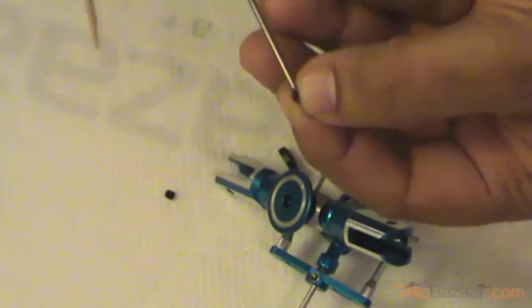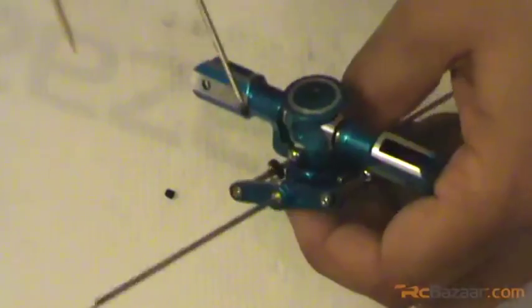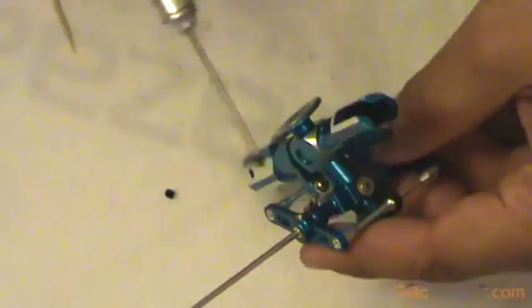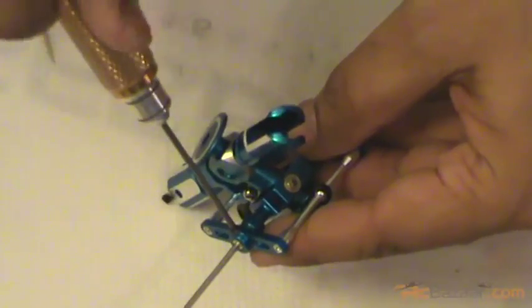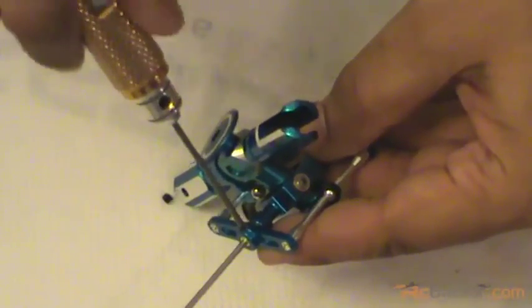Now take the grub screw. Do not apply lock tight right now because we're going to come back to that later once you start taking dimensions and equidistance. Very lightly just tighten it.